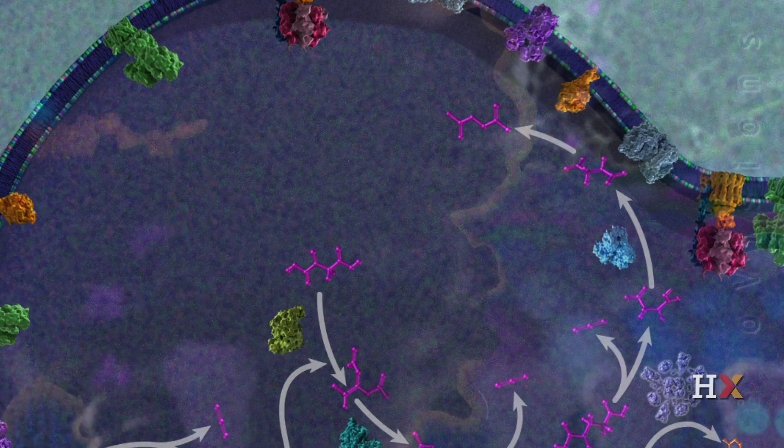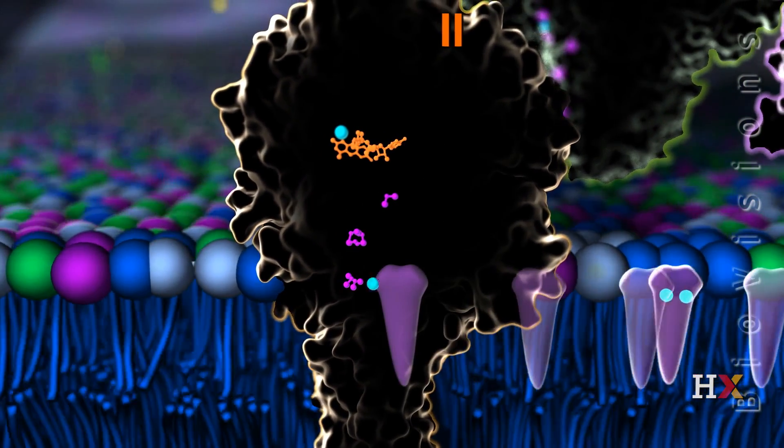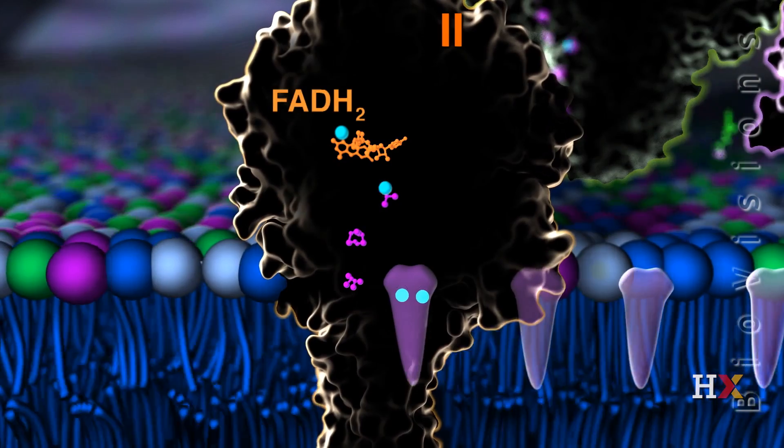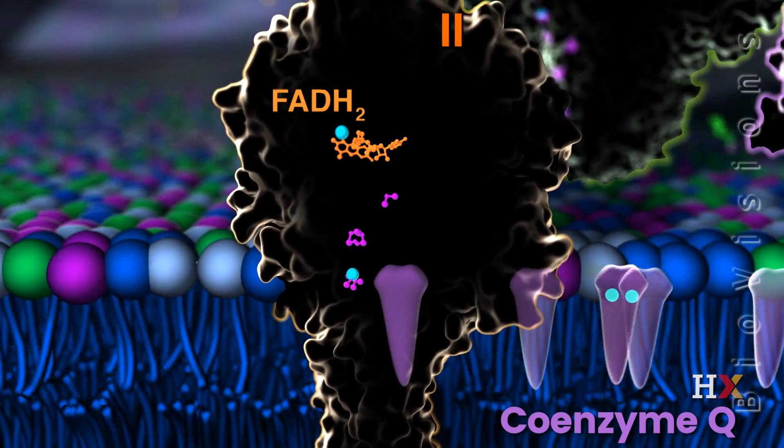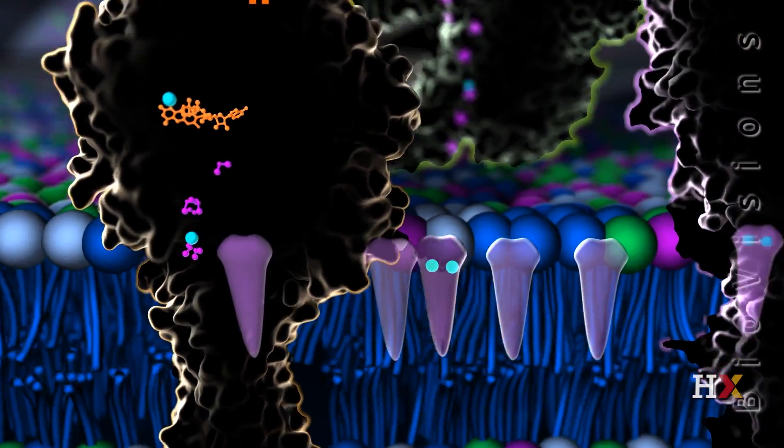As complex II oxidizes succinate, it receives two electrons that it will ultimately pass on to coenzyme Q, which in turn will deliver its electrons to complex III.